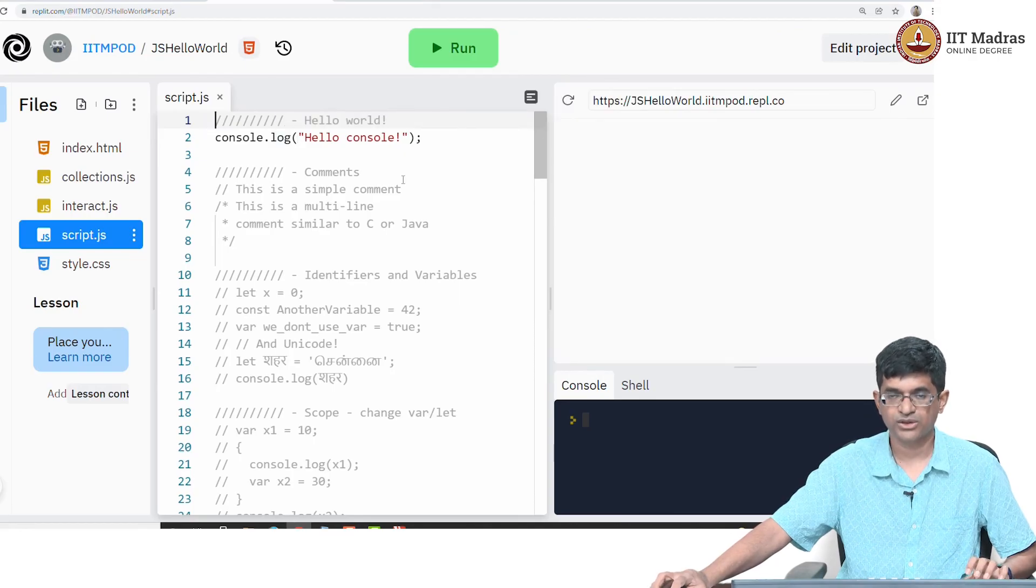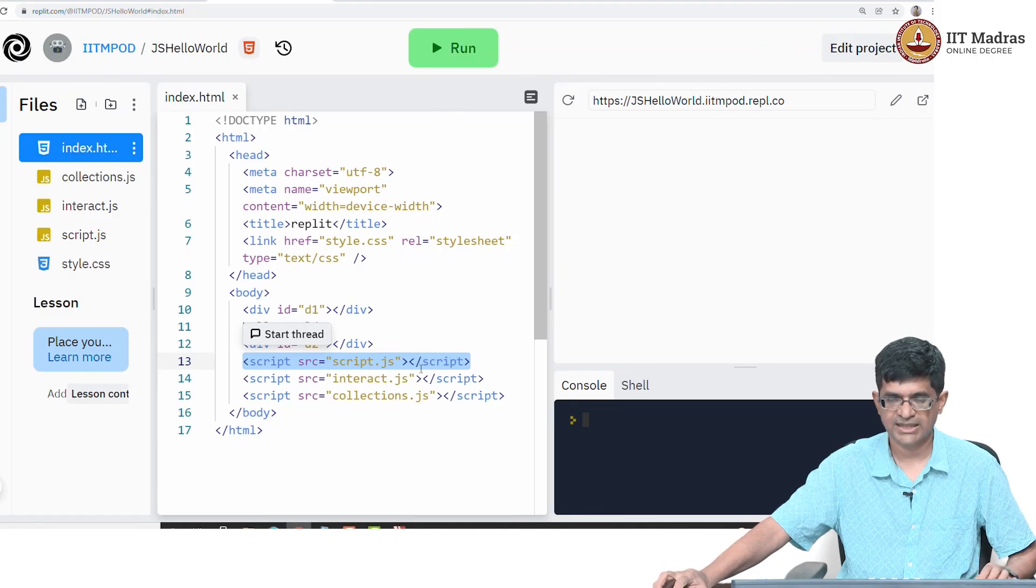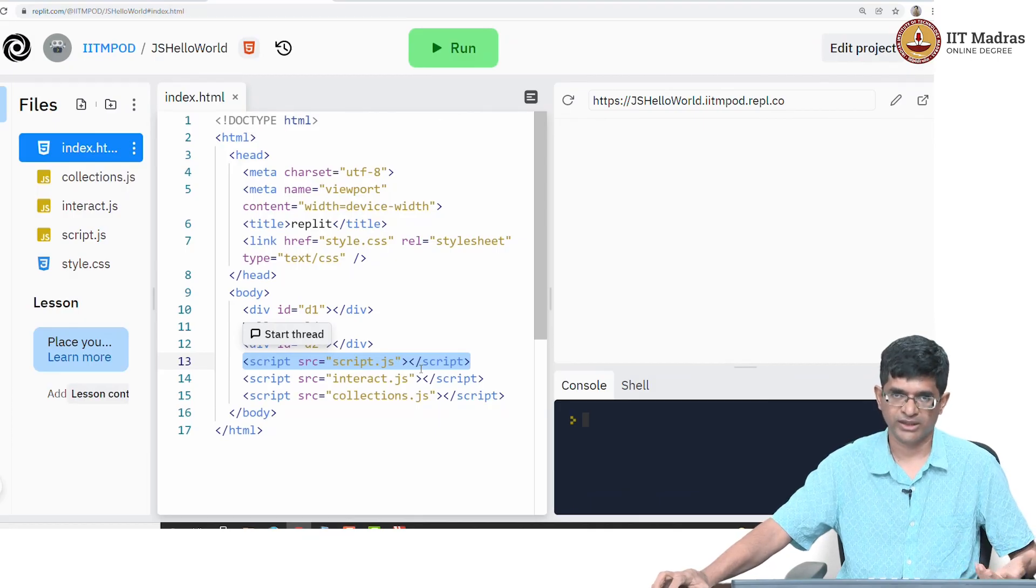Script dot js has just this one line console dot log hello console and this index dot html by itself has a couple of empty divs which are not expected to show anything and it has this one thing saying hello world. If I look just at the html file what I can expect is inside the body there is some text hello world and there is also some script that is going to get loaded. This line 13 over here which basically says script source equal to script dot js slash script is responsible once we run this program for actually loading up that script, executing what is inside it and generating output if needed.